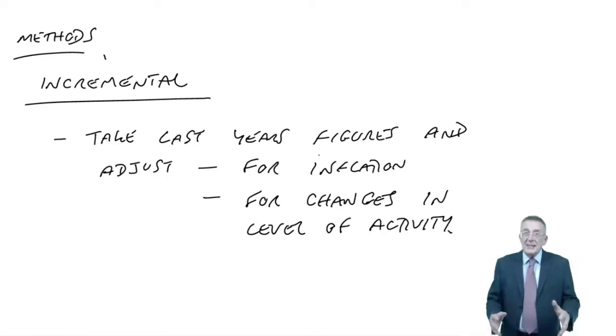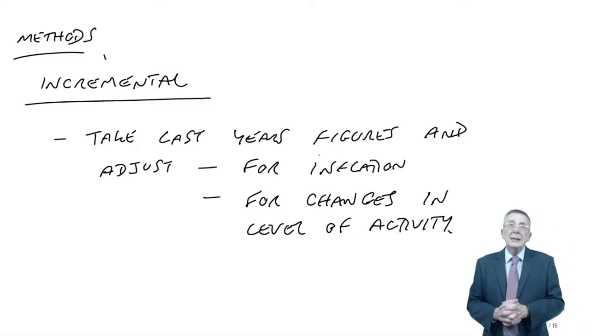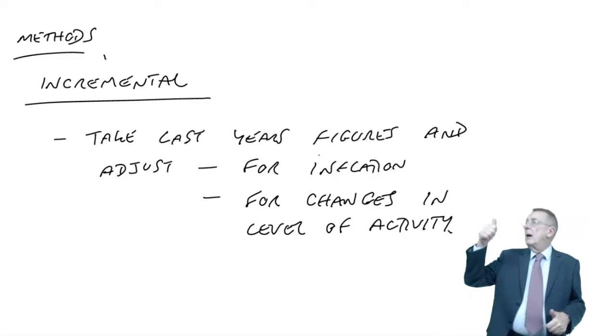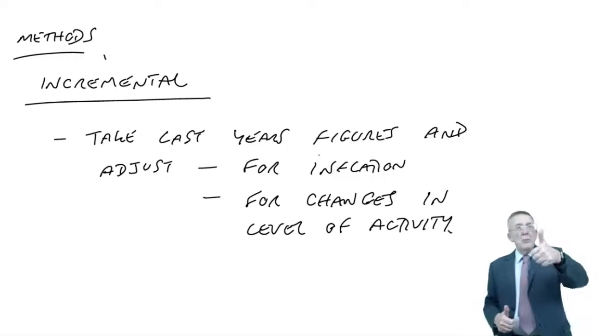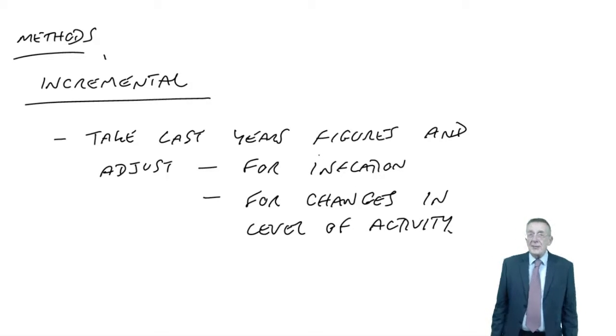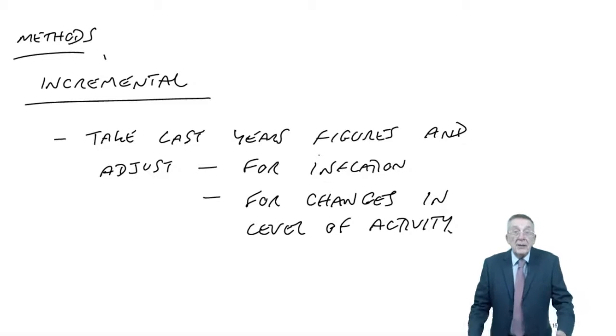Shouldn't somebody sit down and say, ah, telephone. We're spending a lot of money on telephone. Let's list the alternatives. Fixed line, mobile, internet. Let's cost them out. Look at the costs, the benefits, and decide which is best. Maybe we stay with fixed line. Maybe we change to internet. But the time we should do it is when we're doing the budgets.